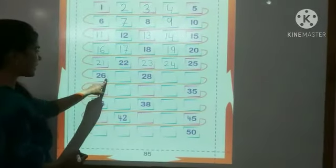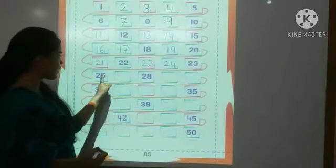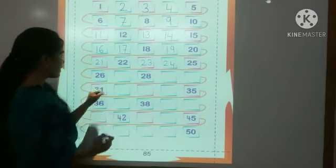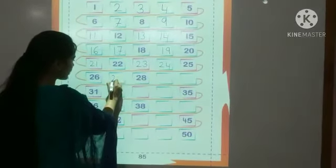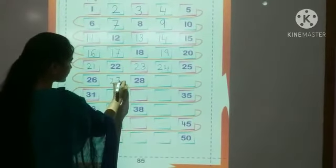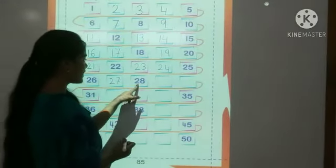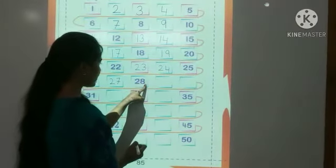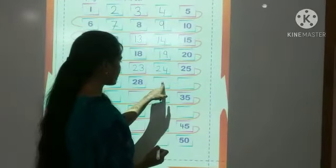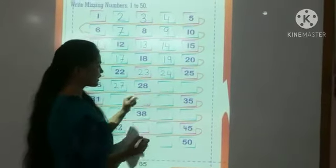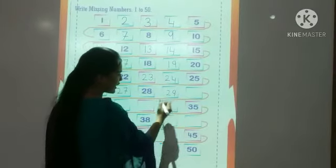After 26? 2 tens and 7 — 27. Then 2 tens and 7, 27. Then which number? 2 tens and 8 — 28. Then again 2 boxes are empty. Which number will come after 28? 2 tens and 9 — 29. Then 3 tens — 30.